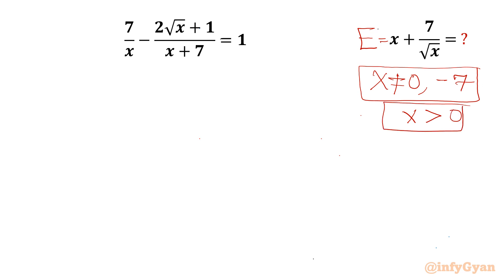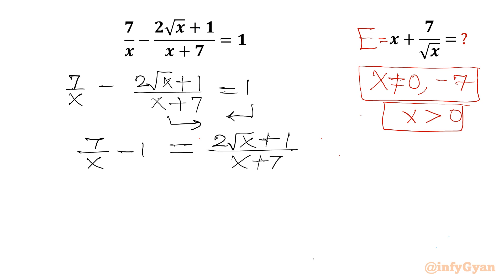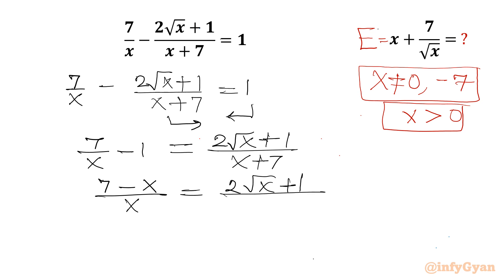Now I will begin with our given equation: 7/x minus 2√x plus 1 over (x + 7) equals 1. I will take the last term to the right and 1 to the left, giving 7/x minus 1 equals 2√x plus 1 divided by (x + 7). Taking LCM on the left-hand side gives (7 minus x) over x equals 2√x plus 1 over (7 + x).